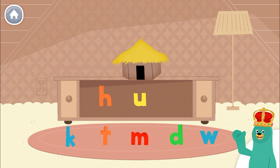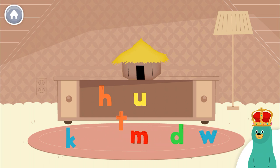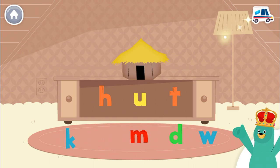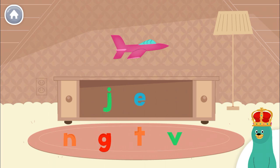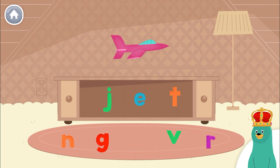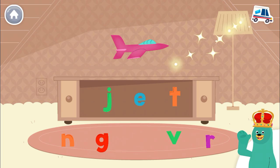Drag the missing letter to spell the word hut. T. Good job. Drag the missing letter to spell the word jet. T. Good thinking.